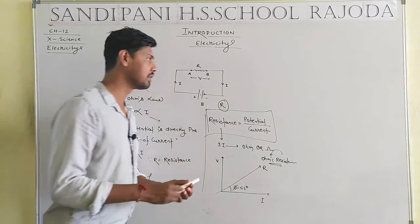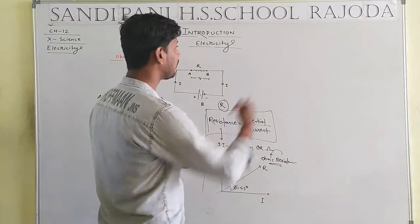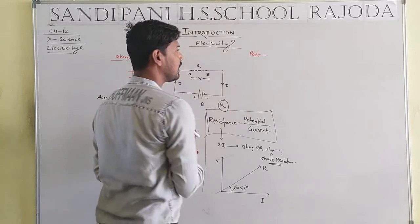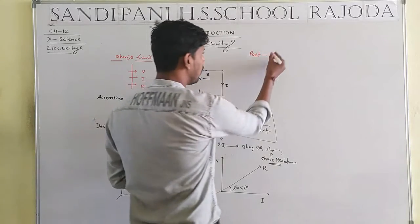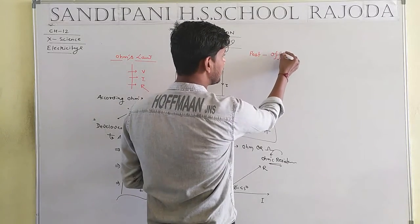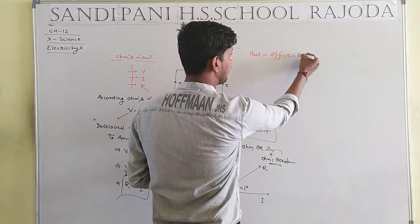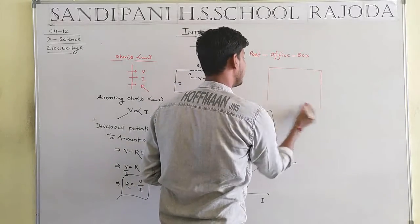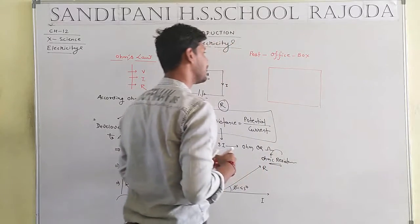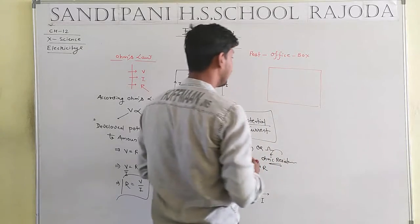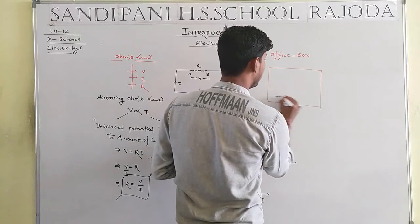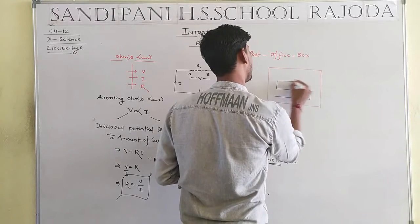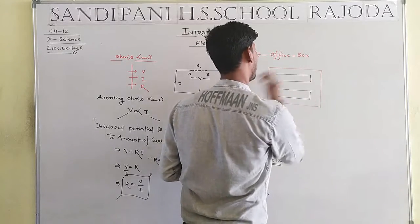When you go to the lab, you will find an instrument called a post office box, also known as a resistance box. It is a wooden box which contains a number of resistances connected in a series form. This is the structure of a resistance box.